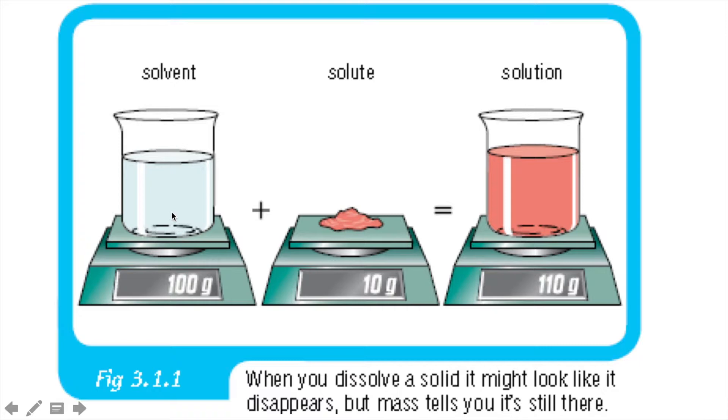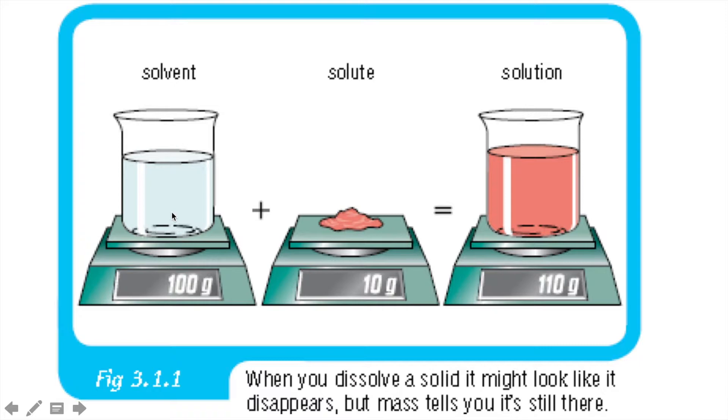Here we see some solvent on top of a weight scale and it registers as 100 grams. When we add the solute, which here is a solid and the solid is weighing 10 grams, when we add these up and we mix these, we make the solution, it does show that the total weight would be 110 grams.